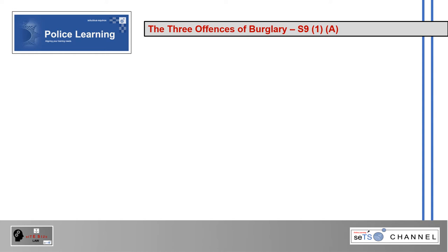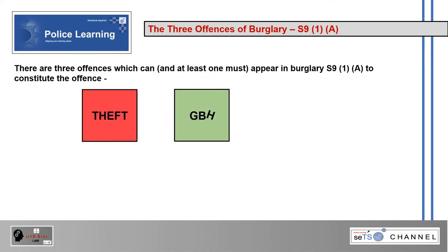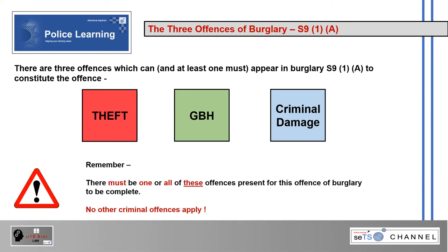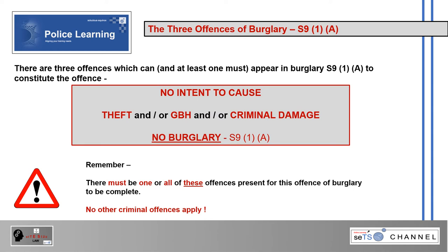The three offences of burglary section 9(1)(a): there are three offences, of which at least one must appear to constitute the offence — theft, grievous bodily harm, and criminal damage. There must be one or all of these offences present for burglary contrary to section 9(1)(a) to be complete. No other criminal offences apply. If there is no intent to cause theft and/or grievous bodily harm and/or criminal damage, then there is no burglary contrary to section 9(1)(a).